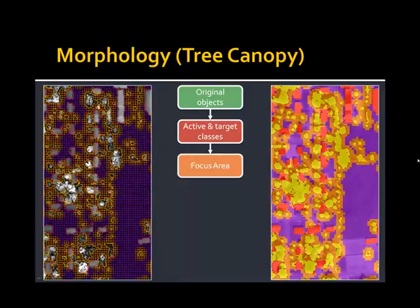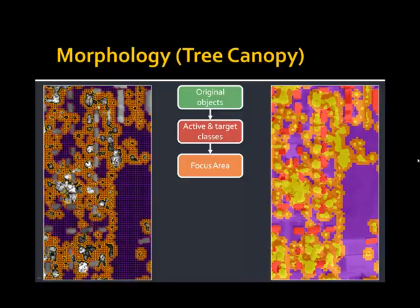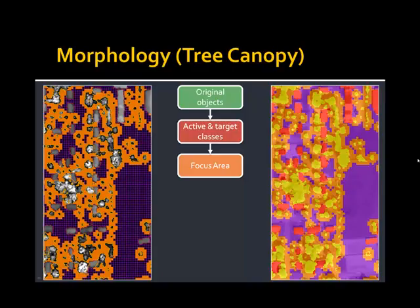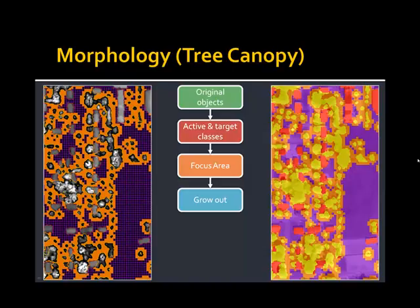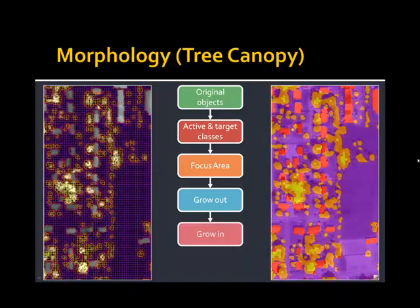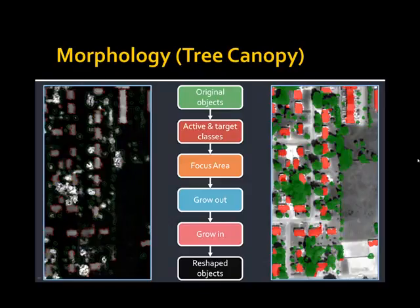We begin by defining a focus area — essentially a buffer around the active class — to reduce memory consumption. Within that focus area, we create pixel-sized image objects and perform a growing operation based on contextual information — specifically the relative border to the active class — to grow the tree canopy out. The result is a much smoother representation of tree canopy. The downside is we begin to overestimate tree canopy, so we then do the reverse operation — growing in — and reverting to the final classification, yielding a much smoother representation of tree canopy objects.